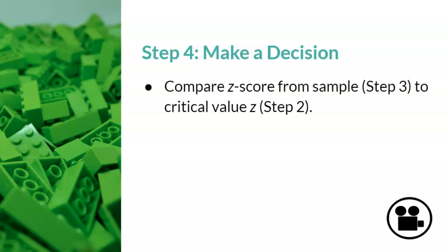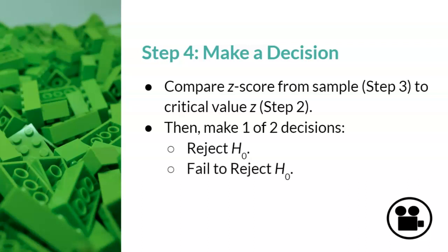Step 4, the green lego, is making a decision about whether the study worked or not. Basically, we are comparing the sample z-score, which is step 3, to the population prediction, or critical value z, from step 2. Based on this comparison, we will make one of two decisions. Either reject the null hypothesis, or fail to reject the null hypothesis. Please see Canvas for the video and example handout that explains these two decisions.